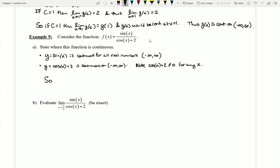So because the top is always continuous, the bottom is always continuous and never equal to zero, we can say that f of x is continuous on negative infinity to infinity. It's continuous everywhere. I can plug any number into the top, any number into the bottom, and I never create a problem.